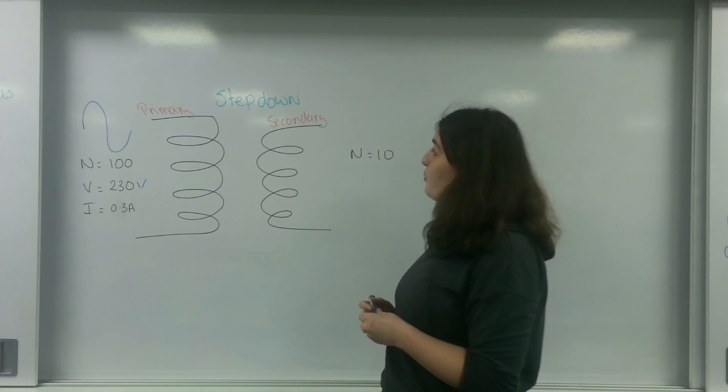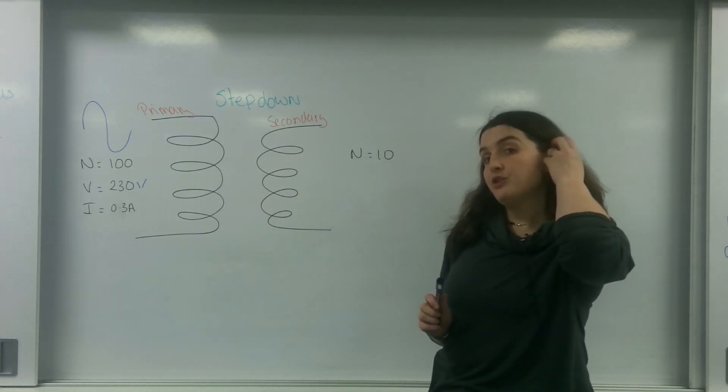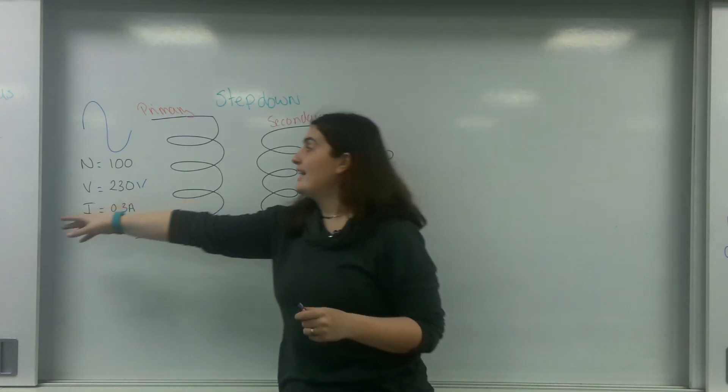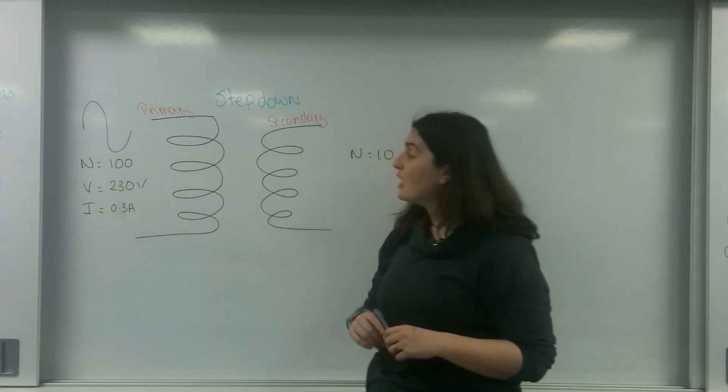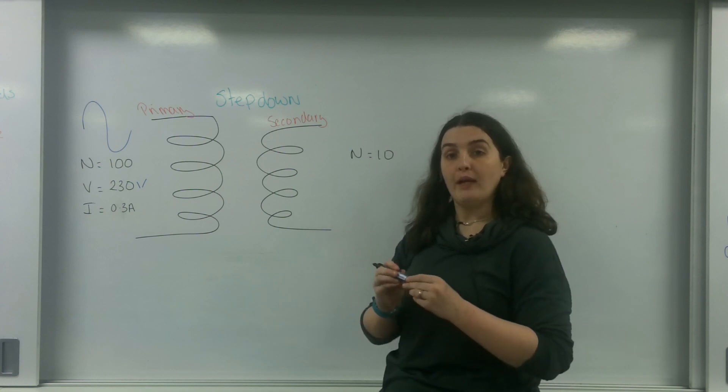So what I have here is a transformer, and this is a step-down transformer. On this side here I have 100 turns, I have 230 volts, and I have a current of 0.3 amps.